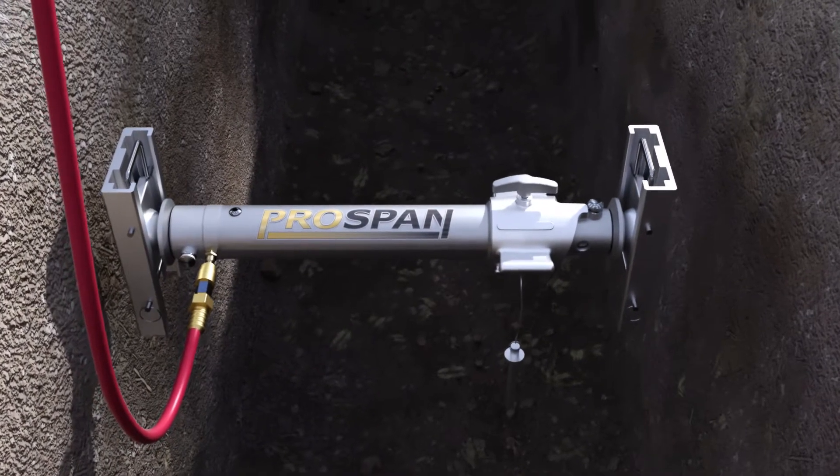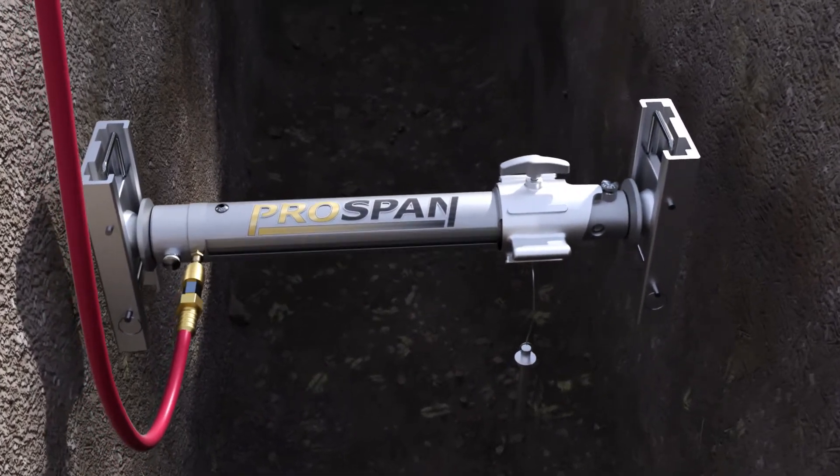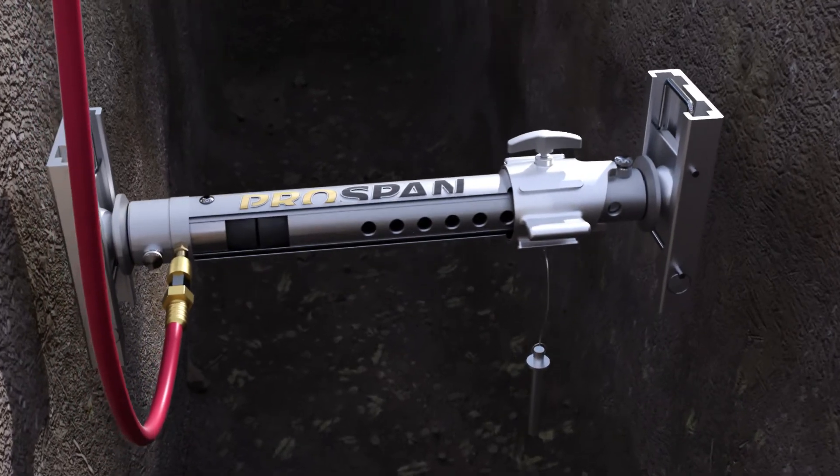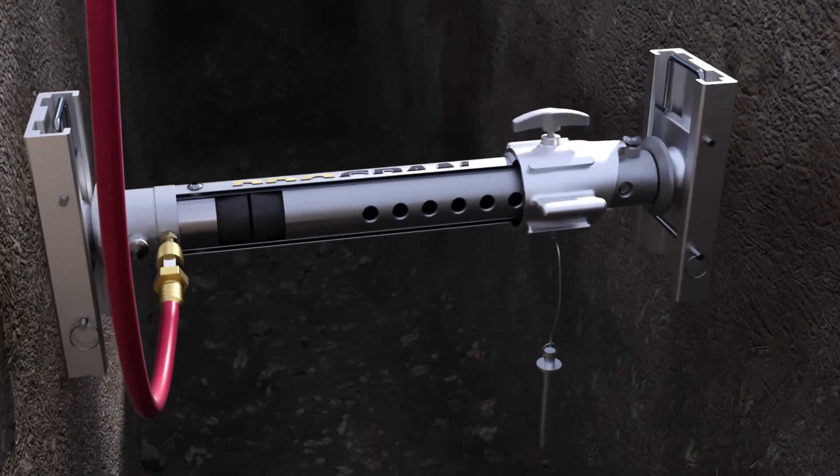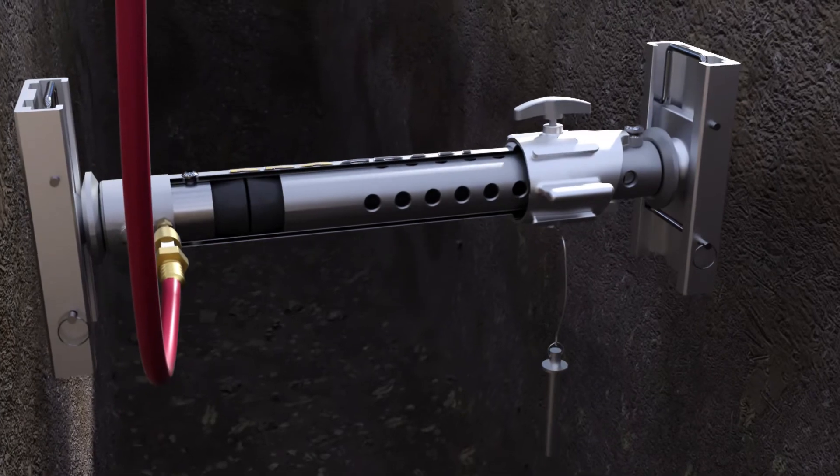Concealed behind the aluminum walls of the ProSpan are two rubber piston cups, one mounted to the bottom of the piston, the other atop the air inlet casting at the base of the ProSpan.